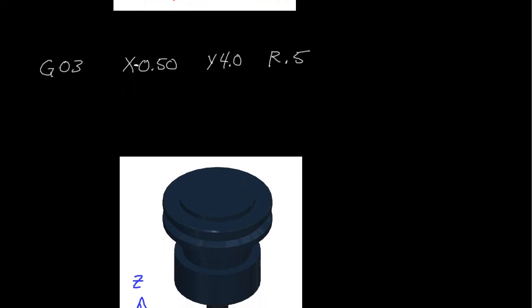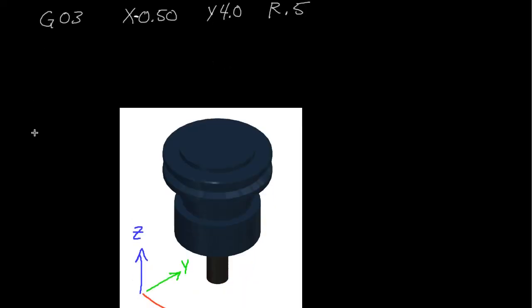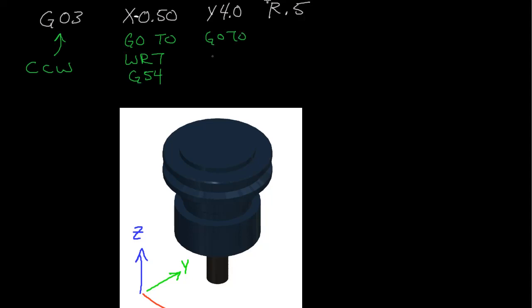Looking at another example: this line of code tells me to go in a counterclockwise tool path because it's using the G03 command — counterclockwise direction. It's going to go to X equals negative 0.5 with respect to G54, Y equals 4 inches with respect to G54, and follow a radius of 0.5 inches.